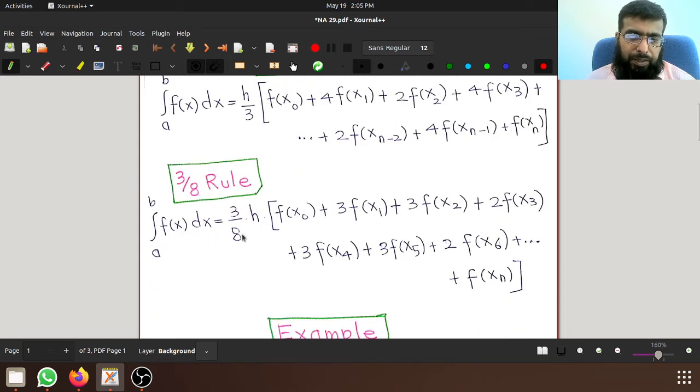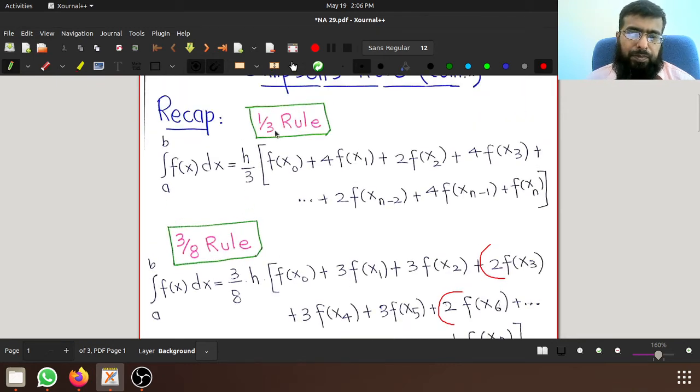The multiples of 3, for example f of x3, f of x6, they are multiplied by 2. And all other terms are multiplied by 3. So these are the two formulas: the one-third rule formula, formula number 1, and formula number 2 for three-eighths rule.